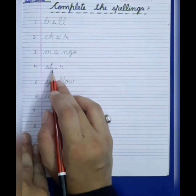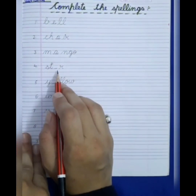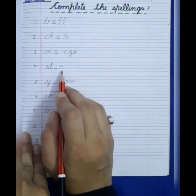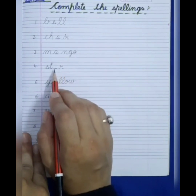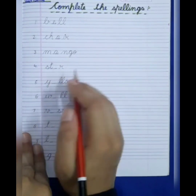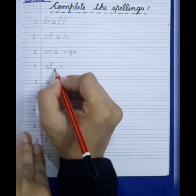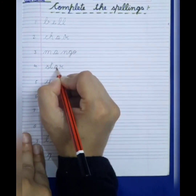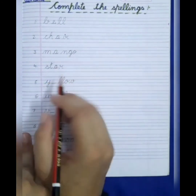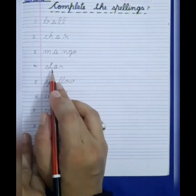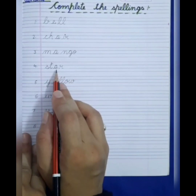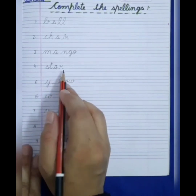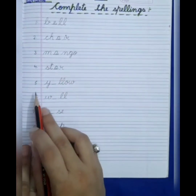So now next, number 4. This spelling is S-T dash R. Star — very good! So what will come here? A. S-T-A-R, star.